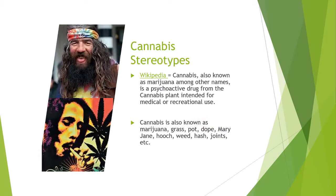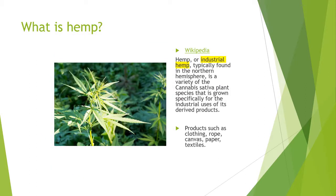Cannabis has its share of stereotypes. In fact, when you Google it, Wikipedia says it's also known as marijuana, which is a psychoactive drug intended for medical and/or recreational purposes. It also shares some other common names for marijuana such as grass, pot, weed, dope, and there are many others. The definition of hemp, on the other hand, is quite different. Wikipedia refers to it as industrial hemp and speaks nothing about the medicinal or nutritional benefits of hemp, but rather only where it is grown and how it is used for products such as clothing, rope, canvas, paper, and textiles.